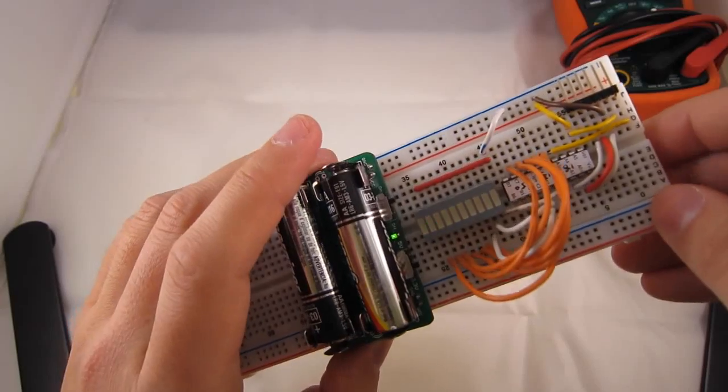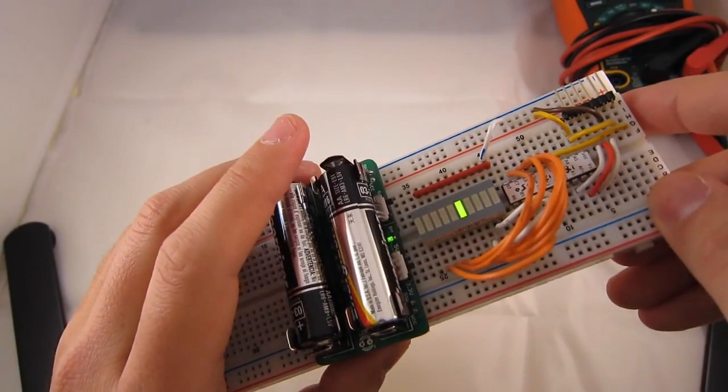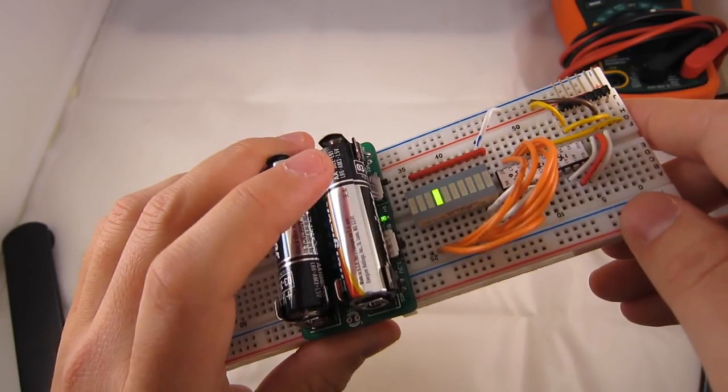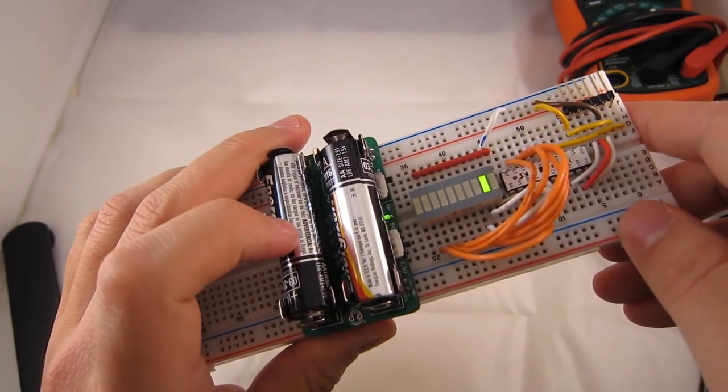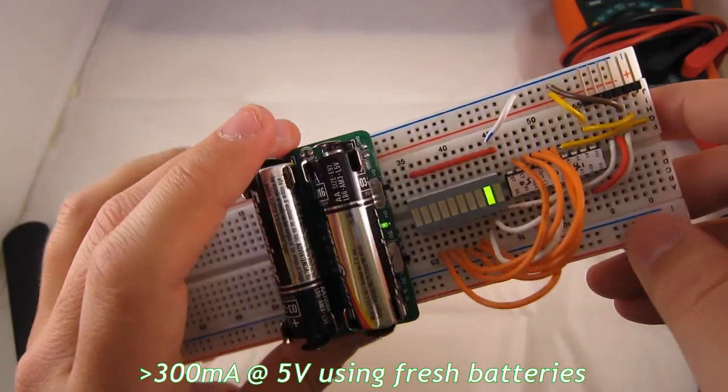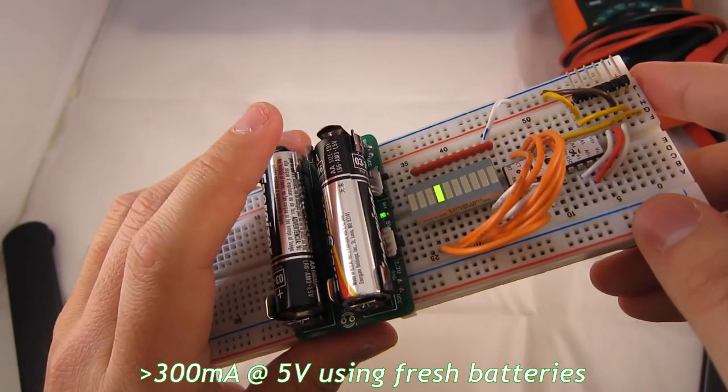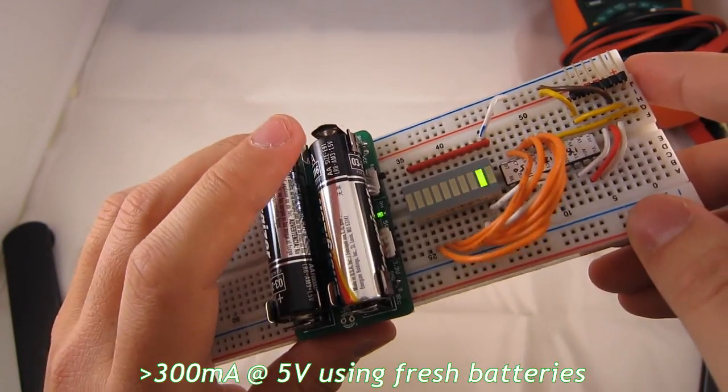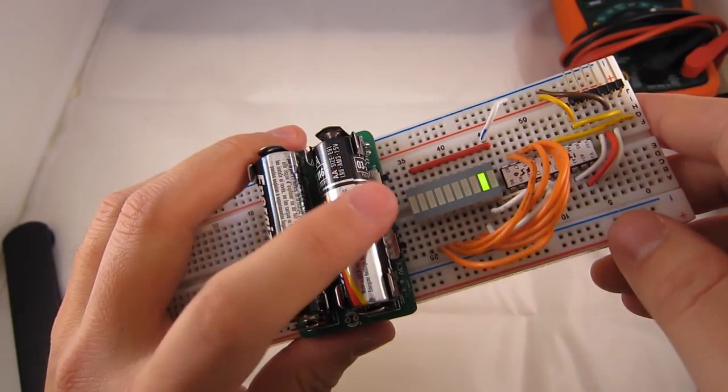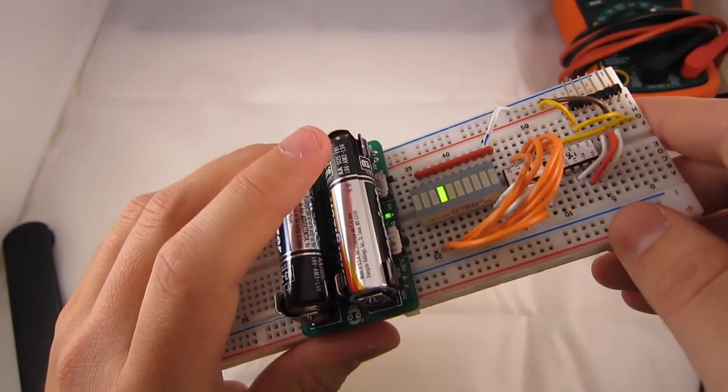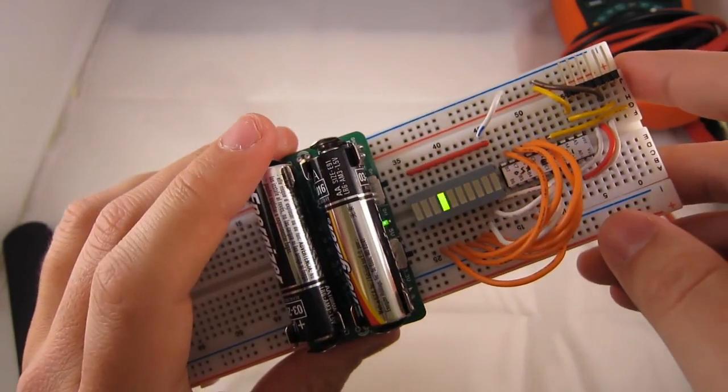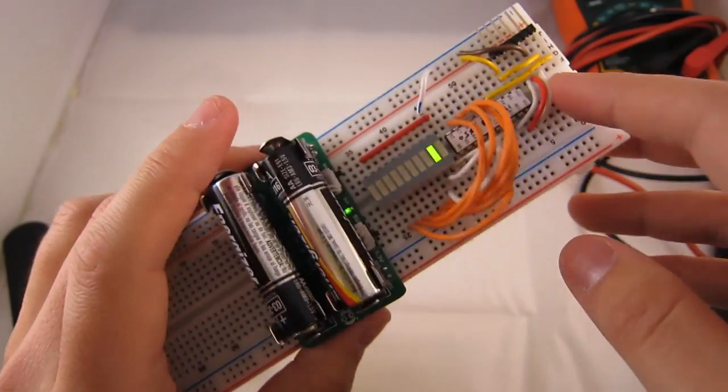Now, the maximum output current under the regulated voltage output will depend on the conditions of the batteries. Now, with a new pair of batteries, this circuit can sustain at least 300 mA of regulated output. But even if your batteries are almost used up, it can still output at least 50 to 100 mA, which is often good enough for a breadboard experiment like this.